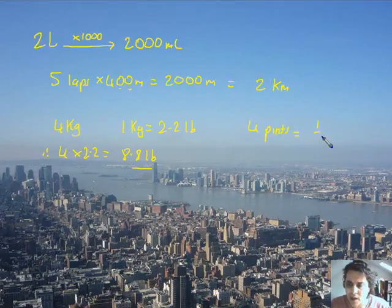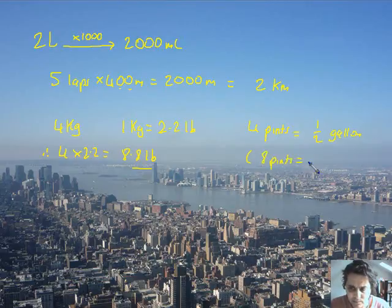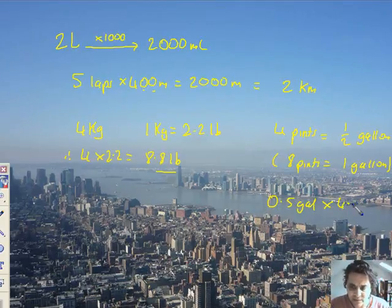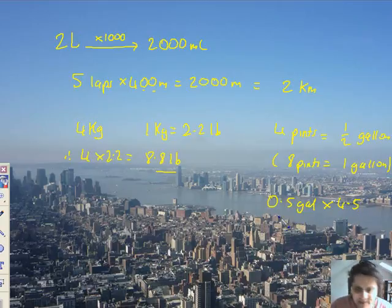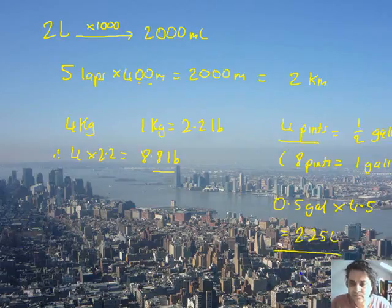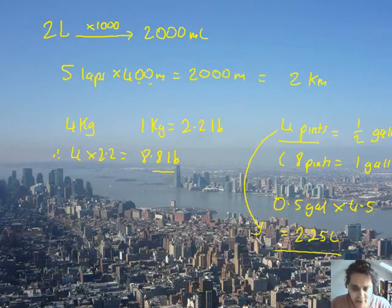Right, four pints equals half a gallon because eight pints equals one gallon. Well, that's not good. We weren't told that. So I've got 0.5 gallons. Now, I know how to convert gallons into liters because every gallon is 4.5 liters. So it's going to be 0.5 gallons times 4.5 and that will give it to me in liters. Yes, so half of 4.5, do it quickly, 2.25 liters. So four pints, 2.25 liters, just do an arrow there to show the connection.